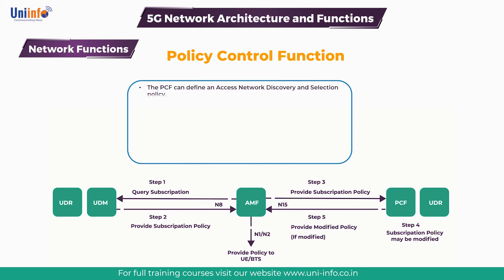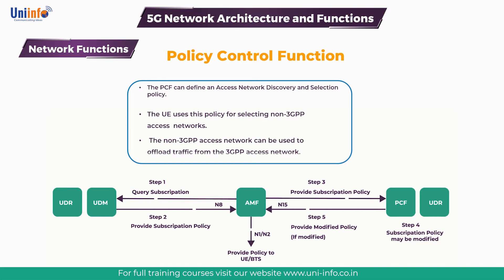The PCF can define an access network discovery and selection policy. The UE uses this policy for selecting non-3GPP access networks, for example a wireless local area network WLAN based upon Wi-Fi. The non-3GPP access network can be used to offload traffic from the 3GPP access network. The UE can be provided with a WLAN selection policy which specifies the conditions under which the UE should search for a WLAN and the set of selection criteria, for example the maximum WLAN load and a list of service set identifiers.